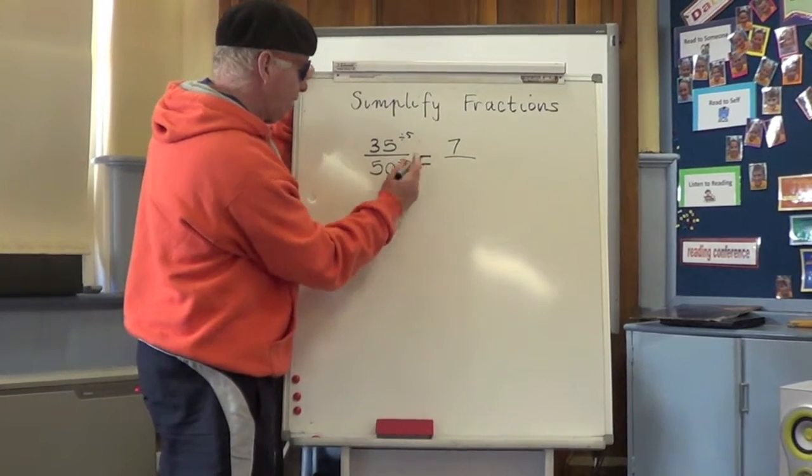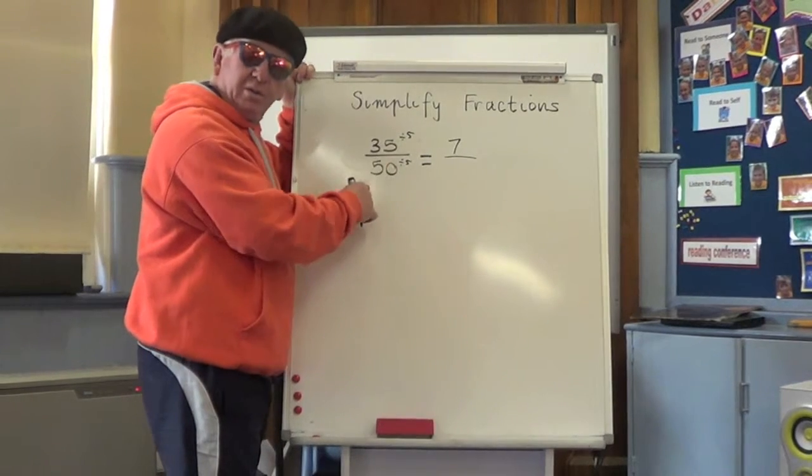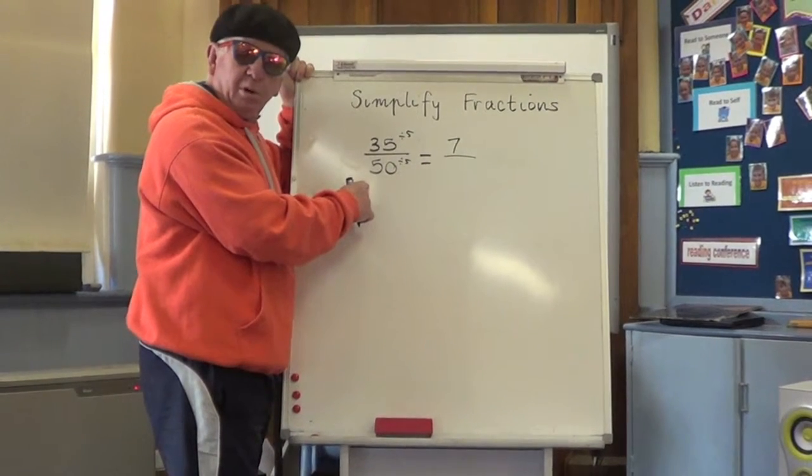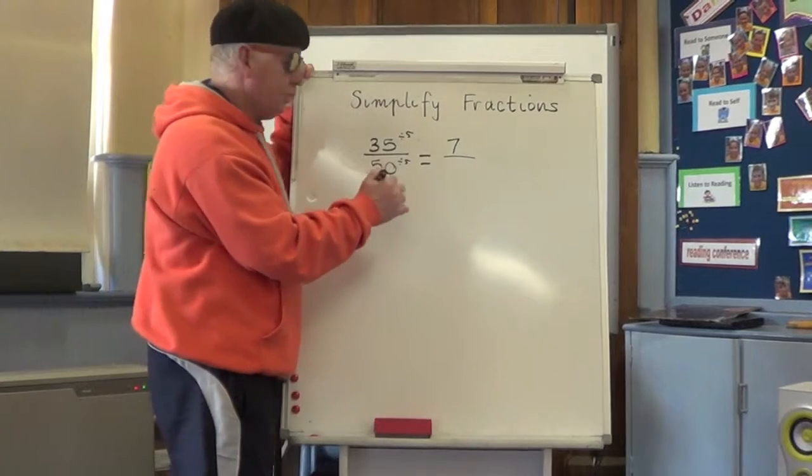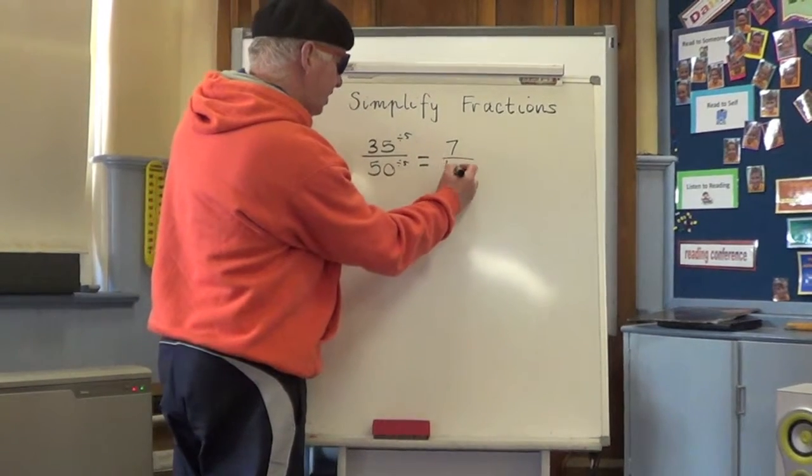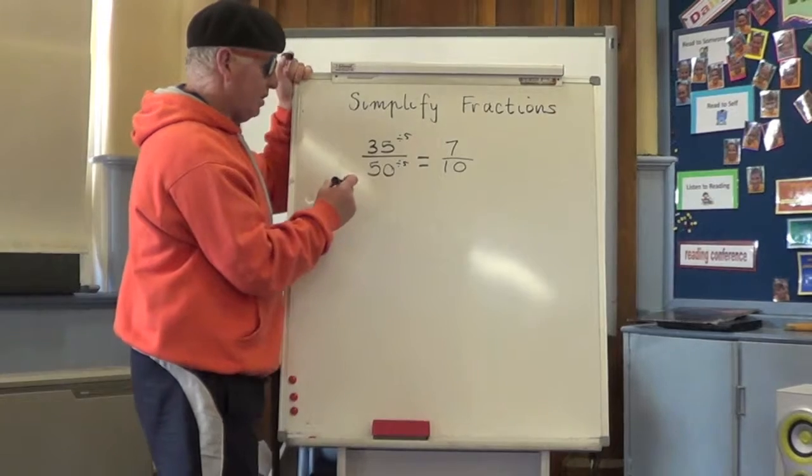We divide this by five because if we divide that by five, we have to divide the denominator by five to make sure we keep the fractions equal. So five into fifty goes ten. Fifty divided by five is ten.